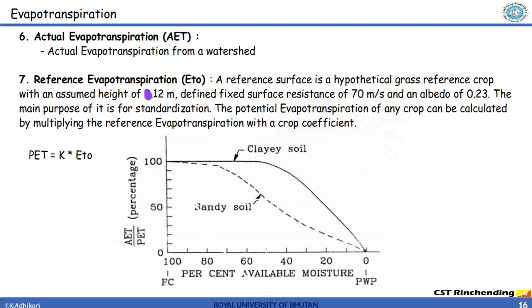This reference evapotranspiration is an easy way of standardizing. If you know a particular standard value then you can multiply that value with the crop coefficient to calculate potential evapotranspiration. As a definition, a reference surface is a hypothetical grass reference crop with an assumed height of 0.12 meter, defined fixed surface resistance of 70 meter per second and albedo of 0.23. The main purpose is for standardization.